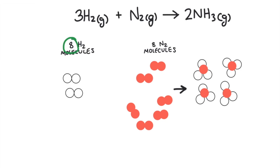What would be left over? Six molecules of hydrogen were used from the original eight molecules, so there would be two molecules of hydrogen left over. And two molecules of nitrogen gas were used from the original eight molecules of nitrogen, so there would be six molecules of nitrogen left over.